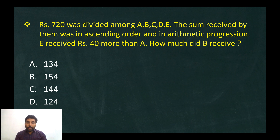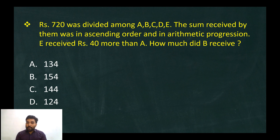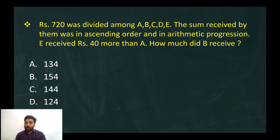Rs. 720 was divided among a, b, c, d, e. The sum received by them was in ascending order and in arithmetic progression. E received Rs. 40 more than a. How much did b receive?